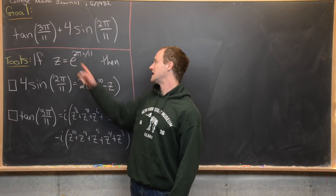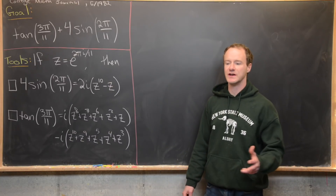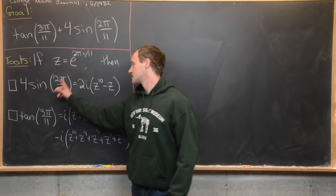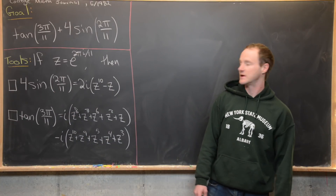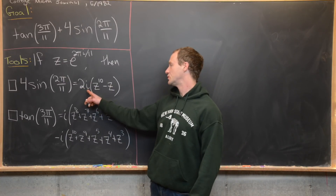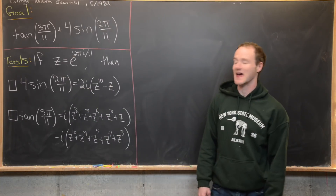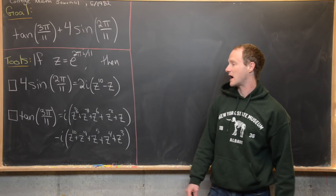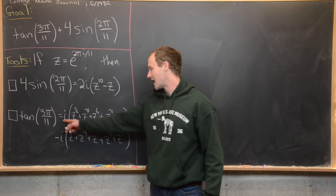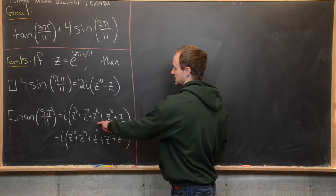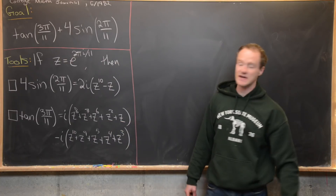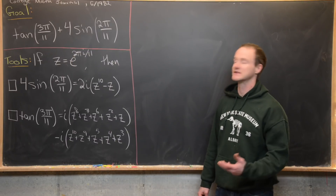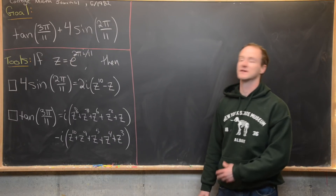If we let z equal e^(2πi/11), so that's a primitive 11th root of unity, then 4·sin(2π/11) is the same thing as 2i times the quantity z^10 minus z. Furthermore, tangent of 3π/11 is equal to i times (z^8 + z^7 + z^6 + z^2 + z) minus i times (z^10 + z^9 + z^5 + z^4 + z^3).